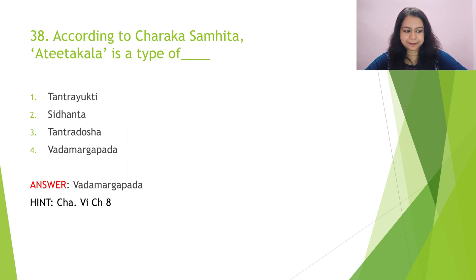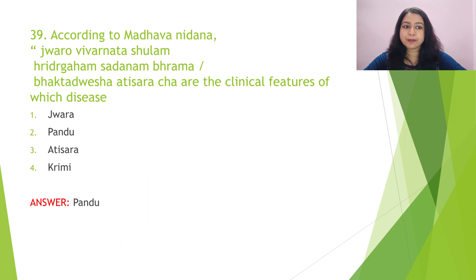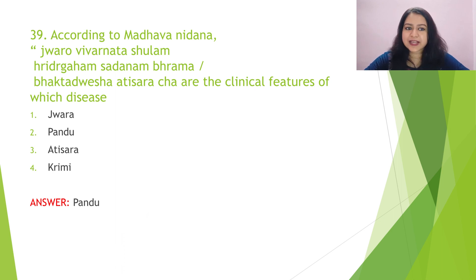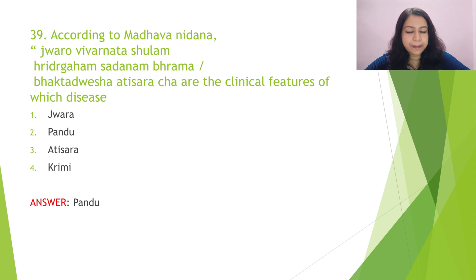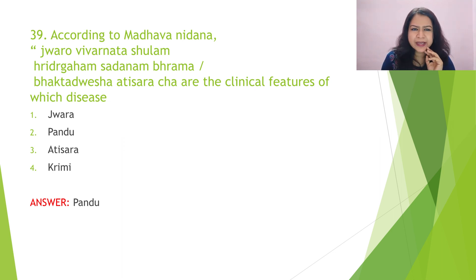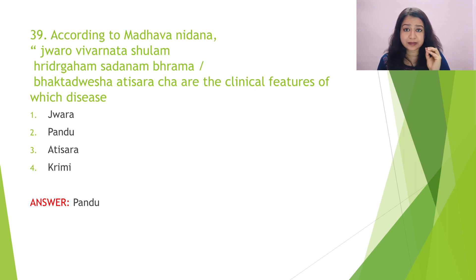Question 39: According to Madhava Nidana, jvaryo, vivarnata, shulam, hridgraham, sadanam, brahma bhaktadvesha, and atisaracha are the clinical features of which disease? It might be a little confusing — you may confuse it with krimi or consider atisaracha — but Acharya Madhava has clearly mentioned these as features of pandu roga.